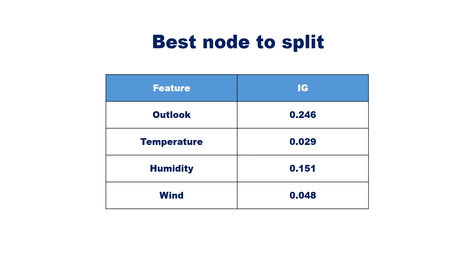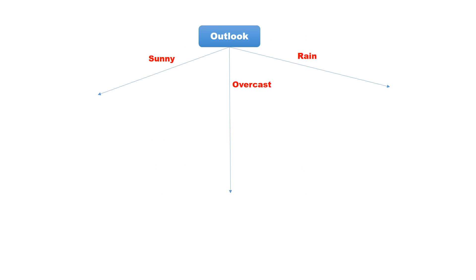Here is the information gain for all 4 attributes. Pick the one with the highest value. The highest value is for attribute outlook. Hence, outlook is the root node. Outlook has three values — sunny, overcast, and rain — so the root node has three branches. Partition the records having the same values for attribute outlook.